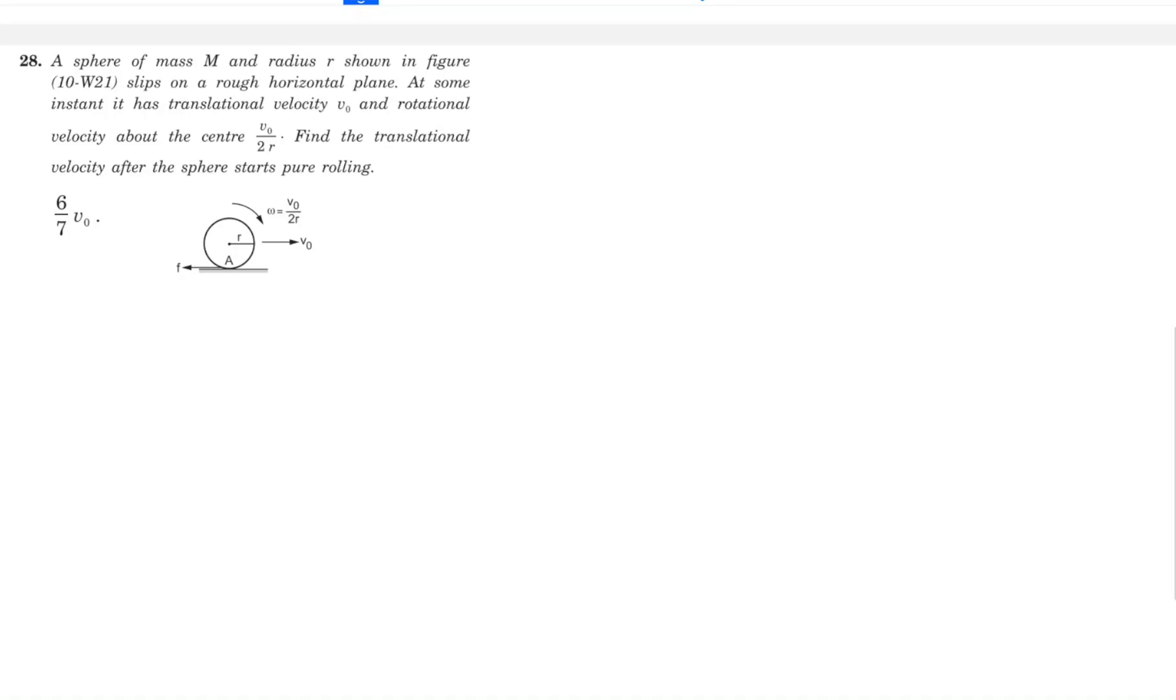Question number 28. A sphere of mass capital M and radius R, shown in the figure, slips on a rough horizontal plane. Slipping over here, rolling over here. At some instant, it has translational velocity V0 and rotational velocity about the center V0 by 2R. Rotational velocity means angular velocity.